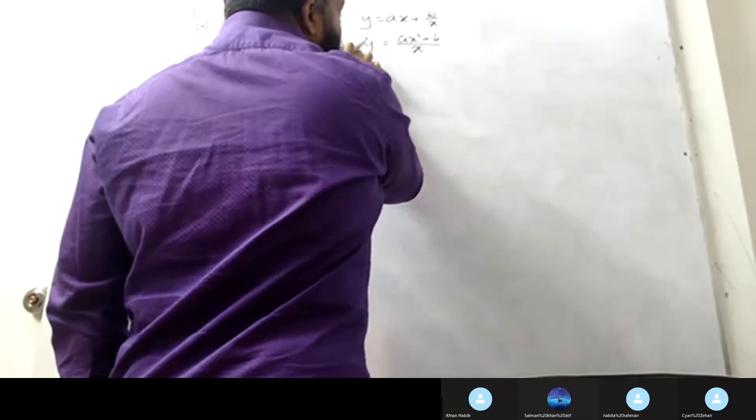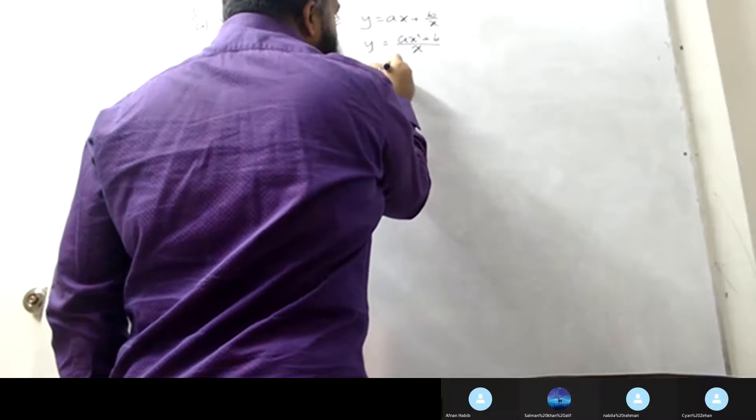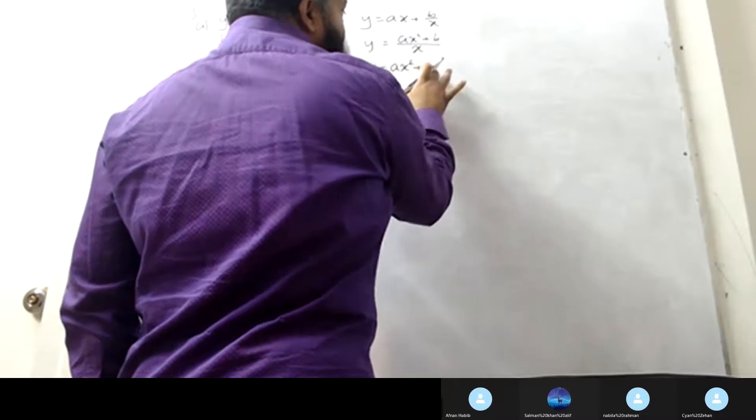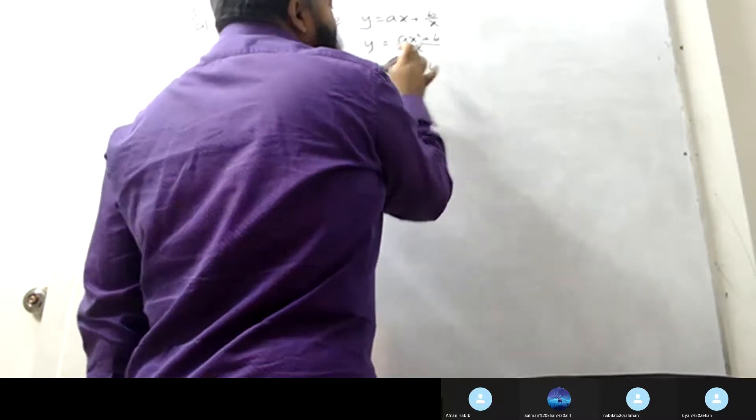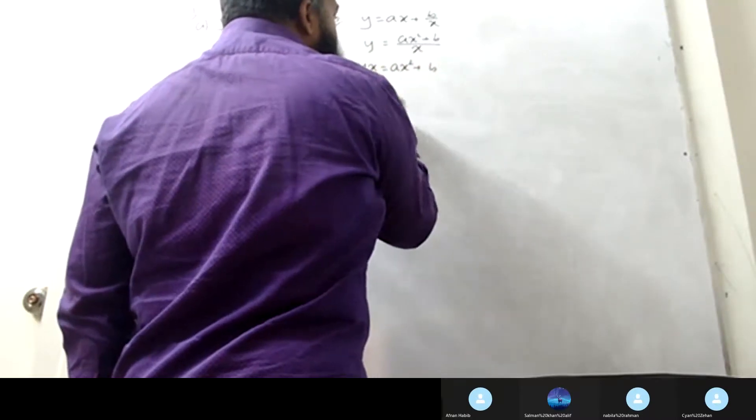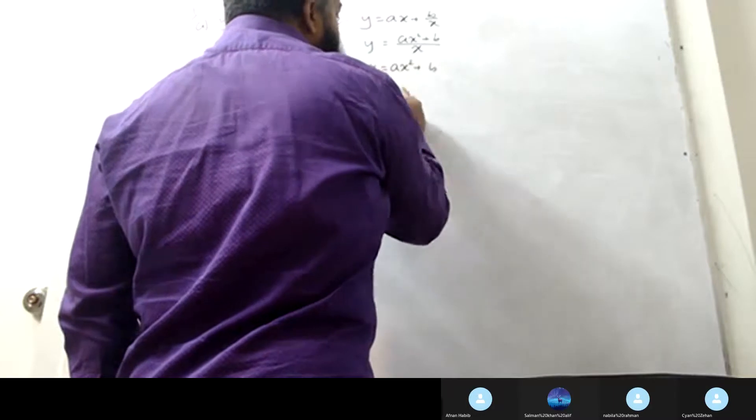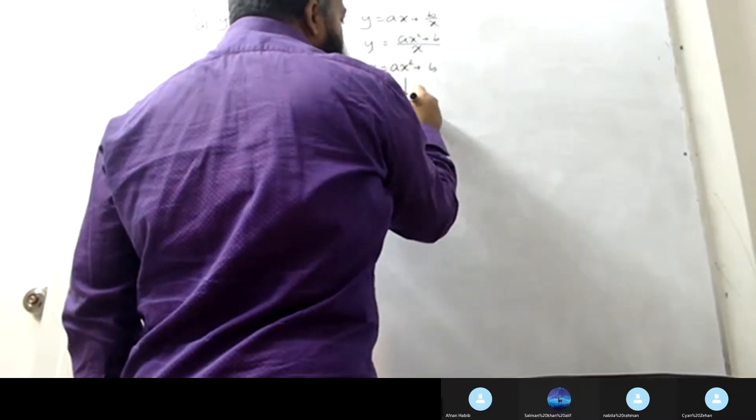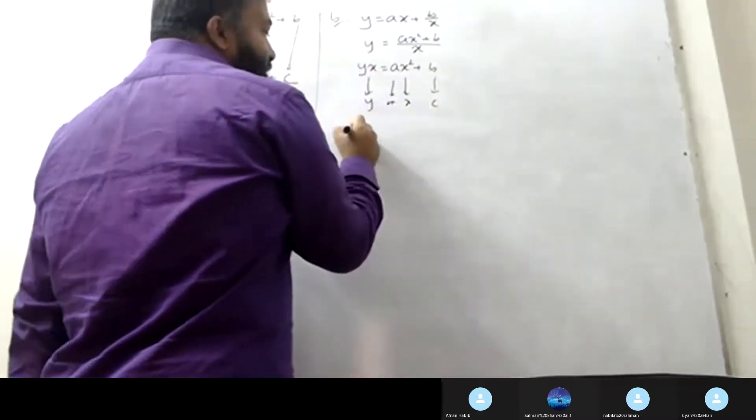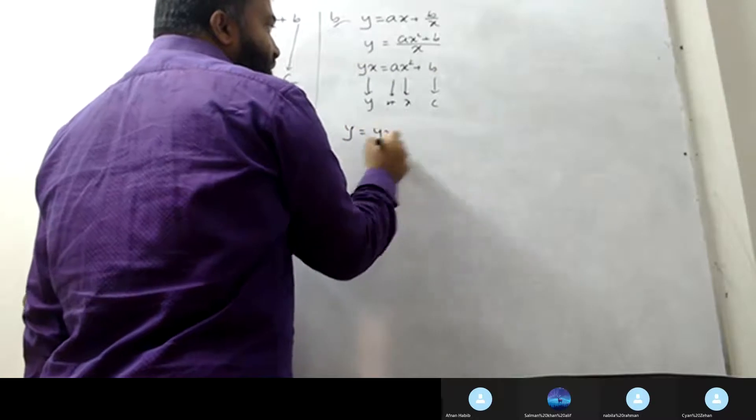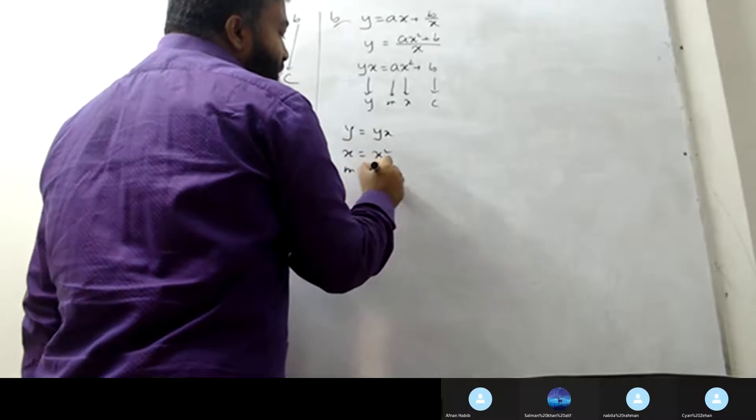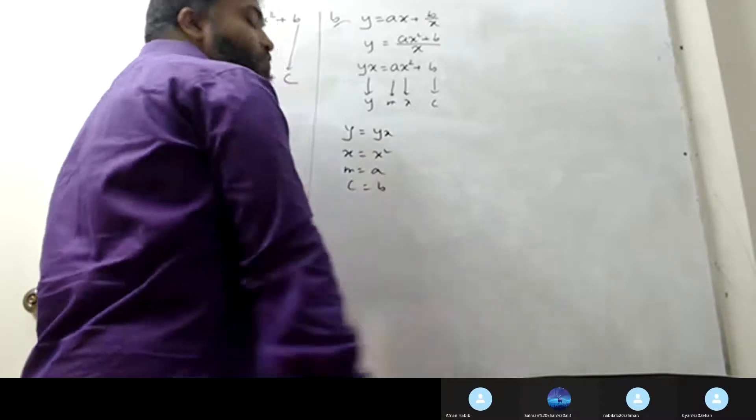For example, we have y equals ax square plus b, where a is constant, and y equals mx plus c. How does y relate? x represents x square, y represents y, m represents a, c represents b.